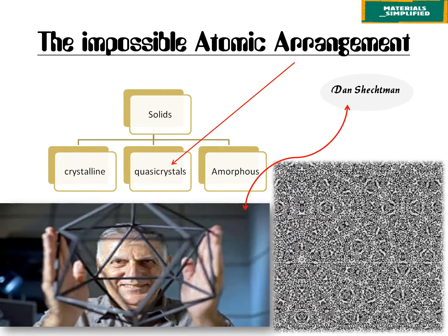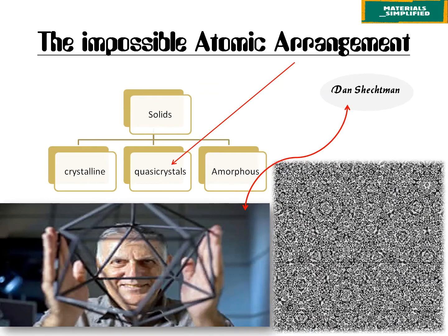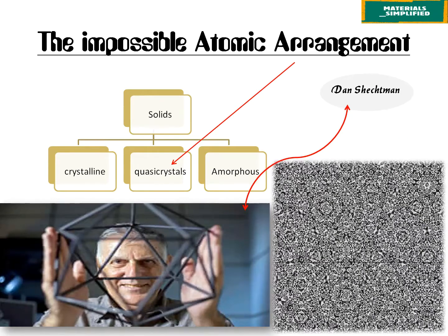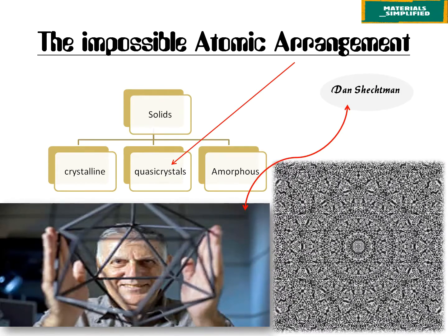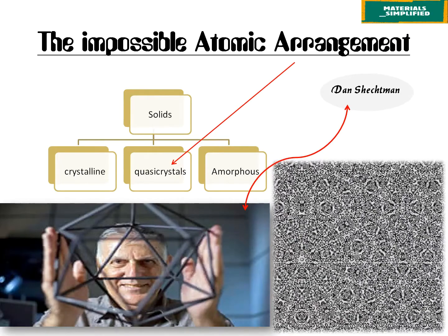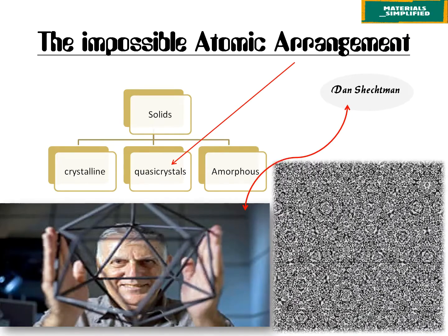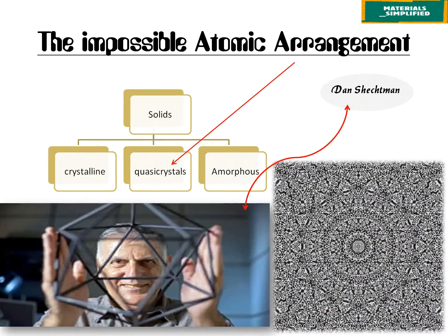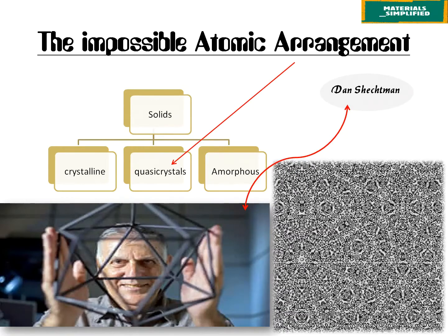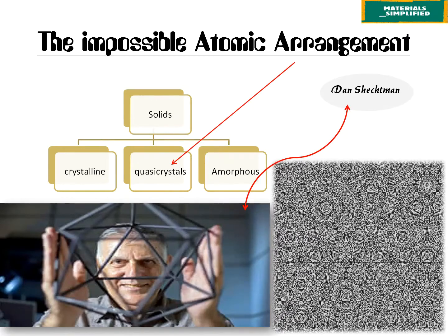Crystals are periodic, which is evident by the fact that they repeat themselves. But quasicrystals lack this periodicity, meaning a quasicrystal will fill all the available spaces in such a way that the pattern of its atomic arrangement will never repeat itself because of the absence of periodicity.